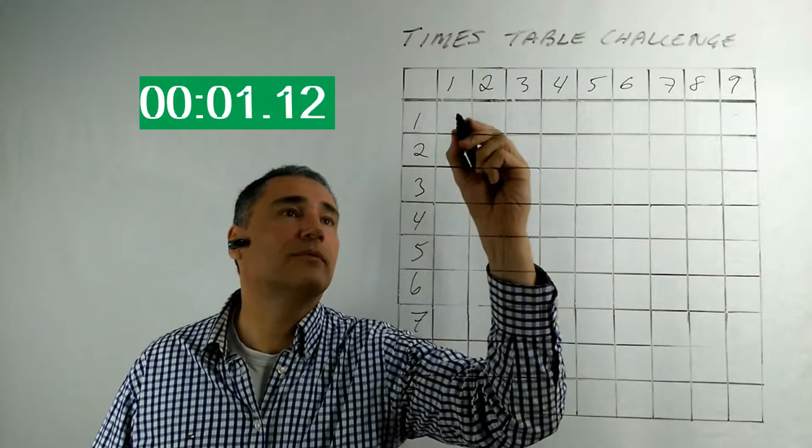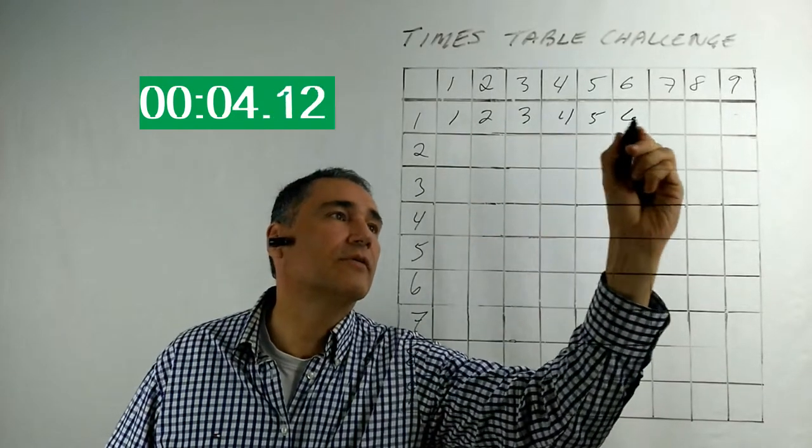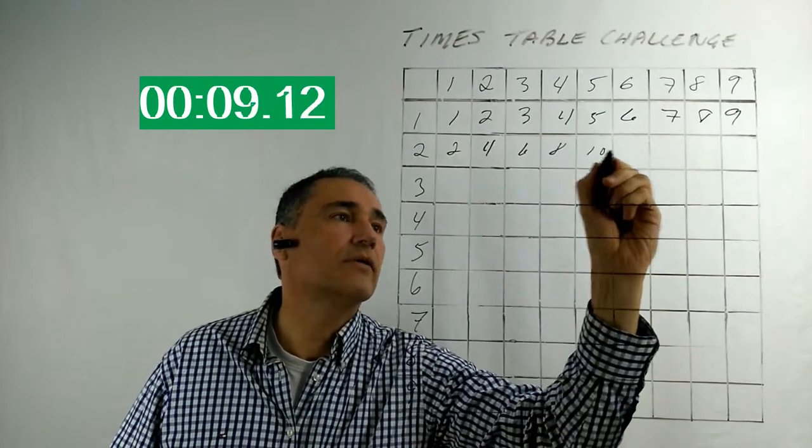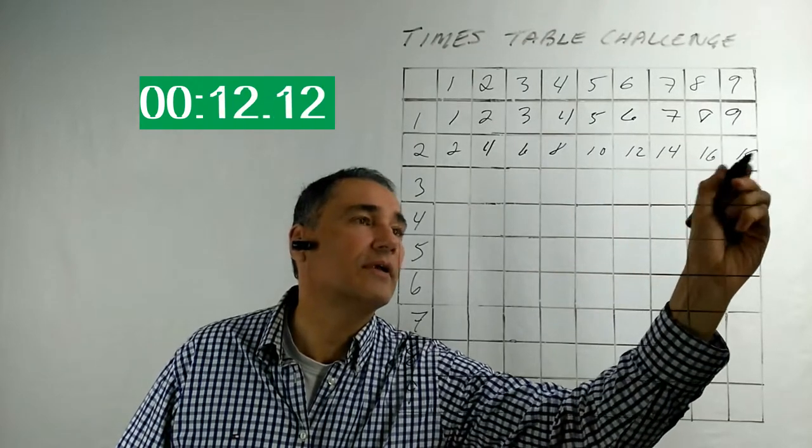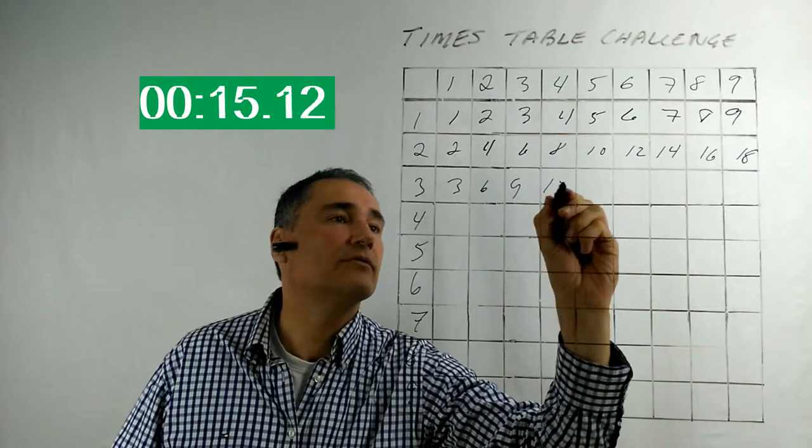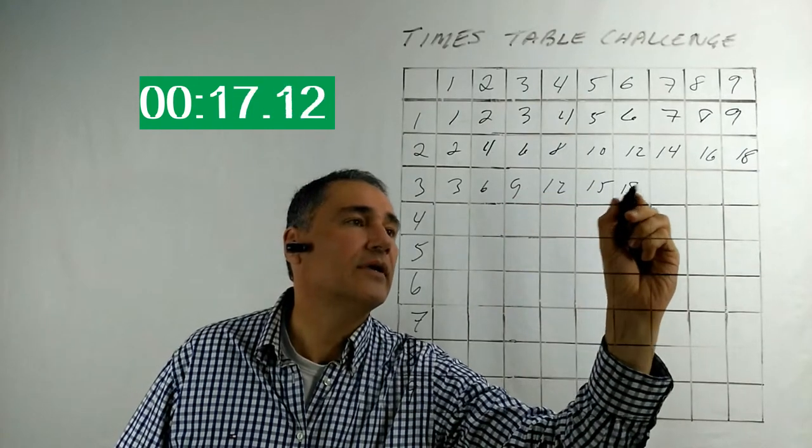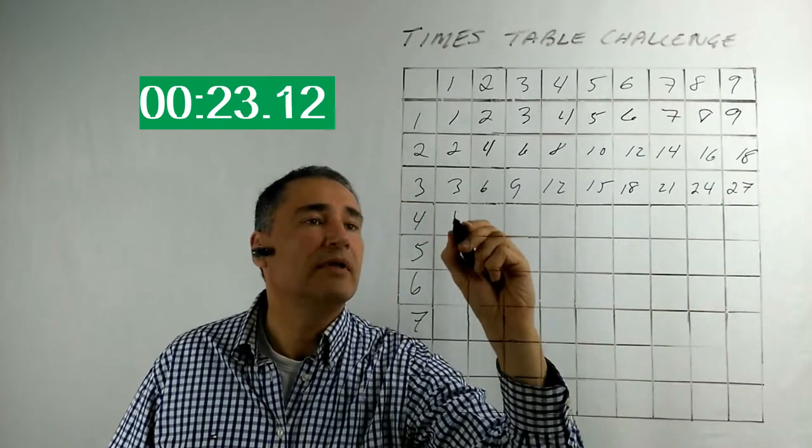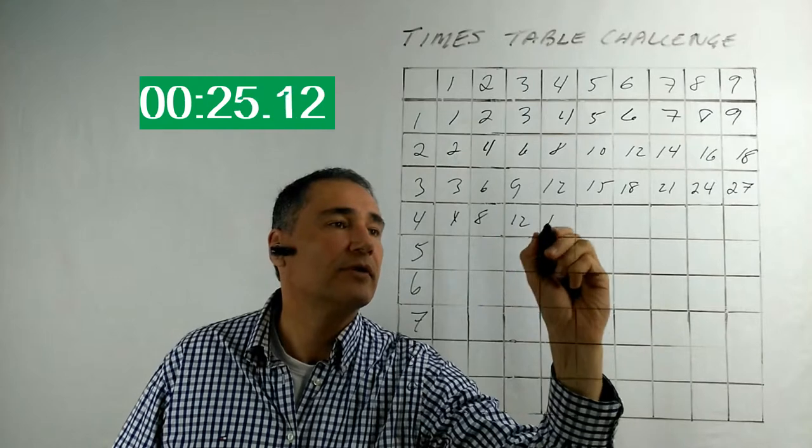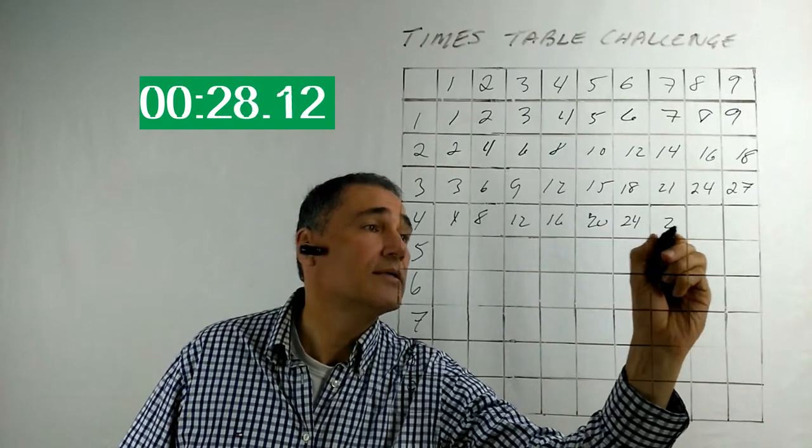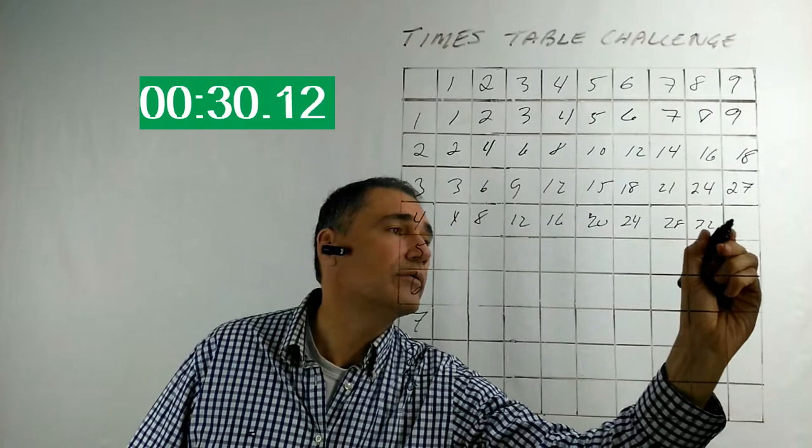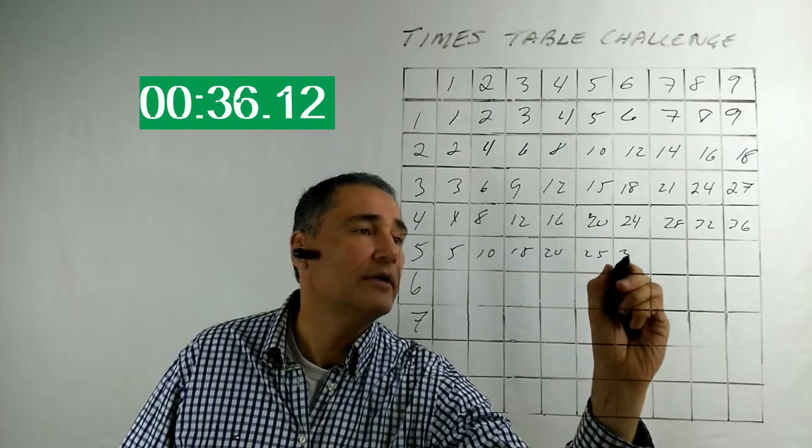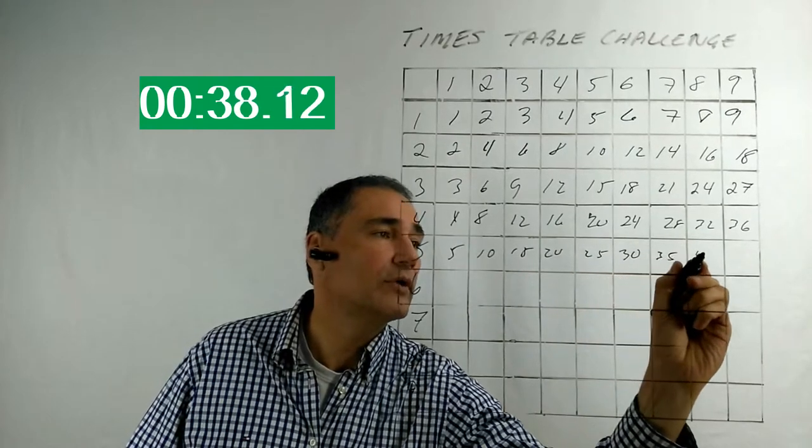He starts filling in the multiplication table, calling out numbers as he writes: 1, 2, 3, 4, 5, 6, 7, 8, 9 for the ones, then 2, 4, 6, 8, 10, 12, 14, 16, 18 for the twos. Continuing through the threes and fours: 3, 6, 9, 12, 15, 18, 21, 24, 27, then 4, 8, 12, 16, 20, 24, 28, 32, 36. Moving to the fives: 5, 10, 15, 20, 25, 30, 35, 40, 45.